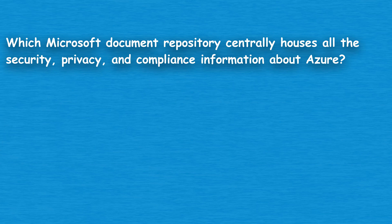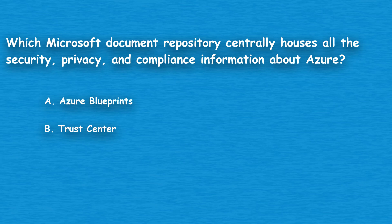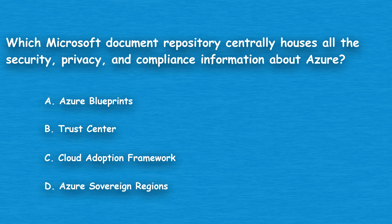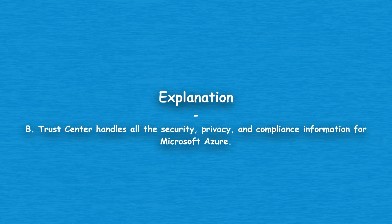The next question: which Microsoft document repository centrally houses all the security, privacy, and compliance information about Azure? Option A: Azure Blueprints. Option B: Trust Center. Option C: Cloud Adoption Framework. Option D: Azure Sovereign Regions. The correct answer is Option B, Trust Center. Trust Center handles all the security, privacy, and compliance information for Microsoft Azure.